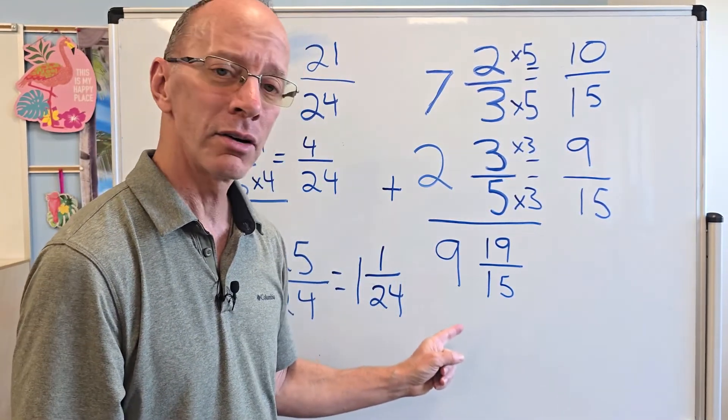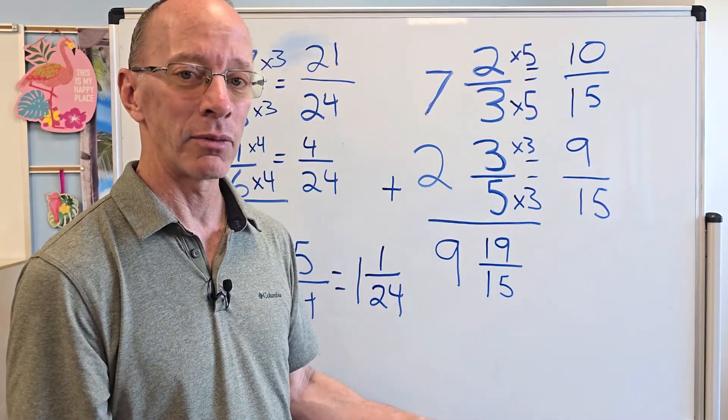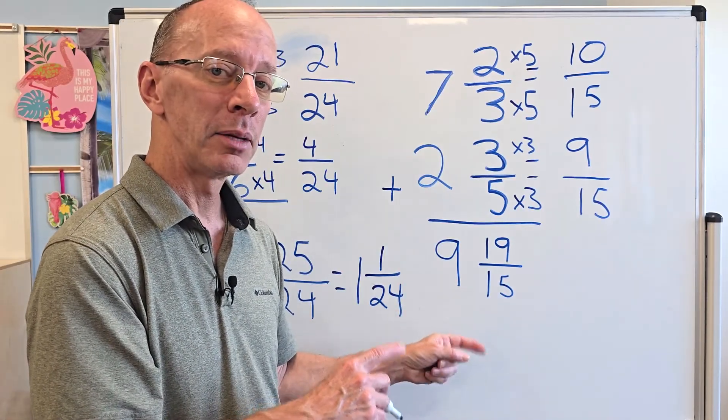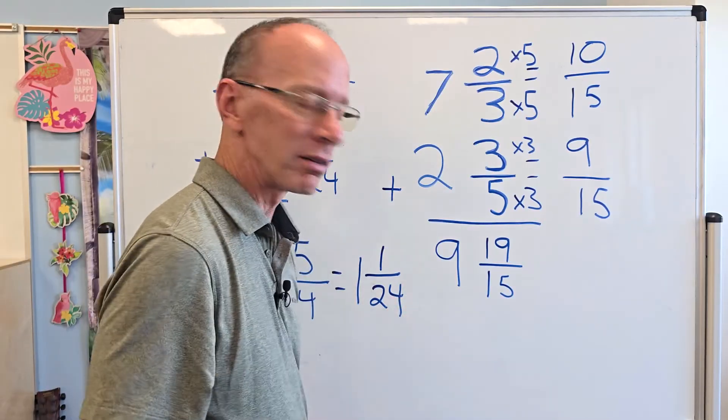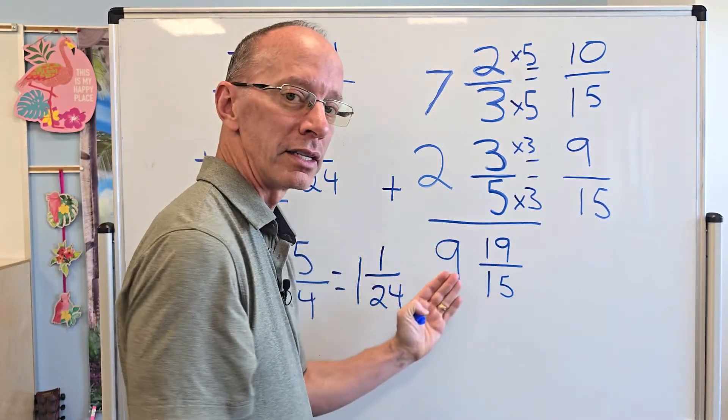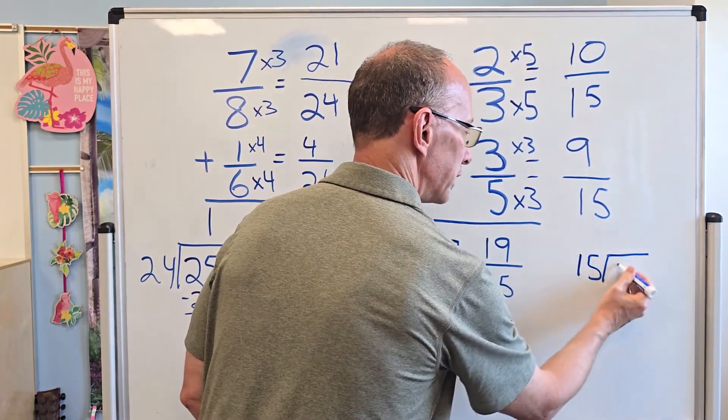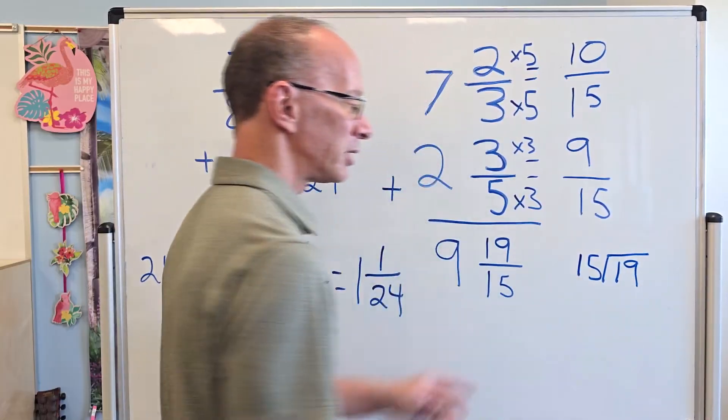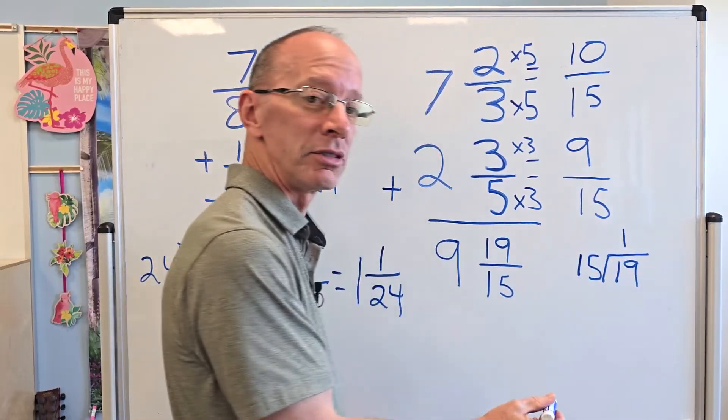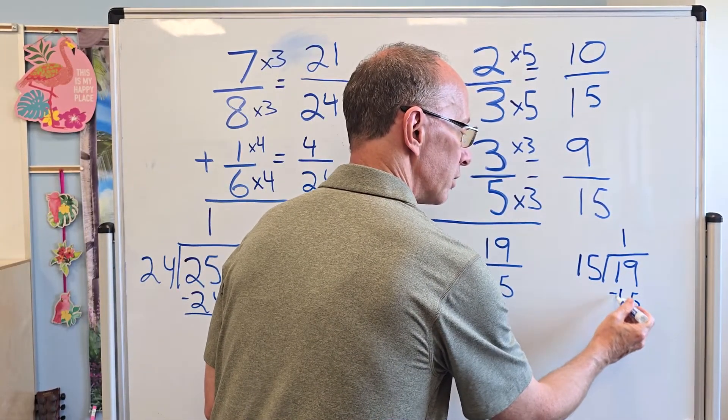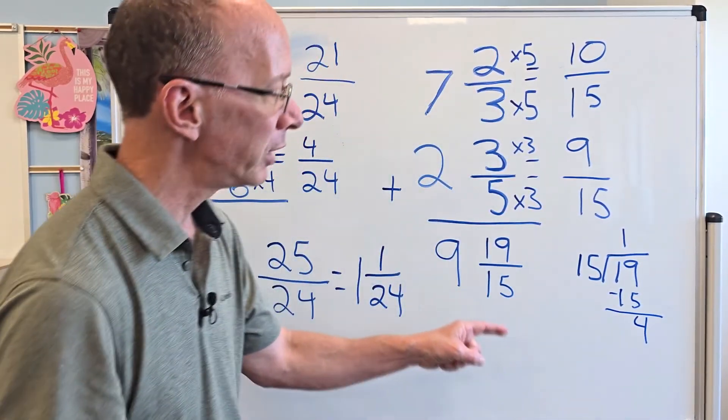Are we done? What do you notice right here? What do you notice? Yeah. The numerator is bigger than the denominator. We can't have that. We need to change that over to a mixed number or a proper fraction. Don't worry about that 9 right now. Let's just put that 9 to the side here and let's just work on this. So we just need to do a little division right here. I'm going to put 19 right here. And how many times does 15 go into 19? One time. 1 times 15 equals 15 right here. Do a little subtraction. 9 minus 5 would be 4.